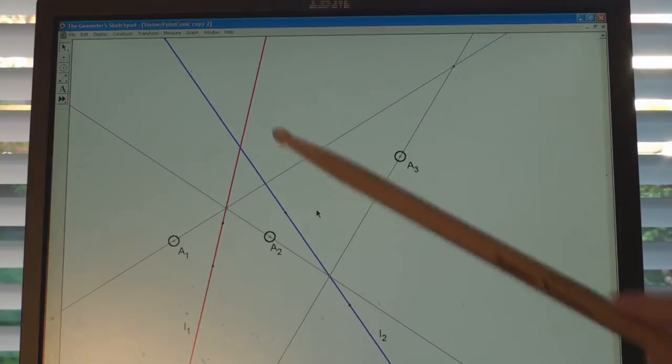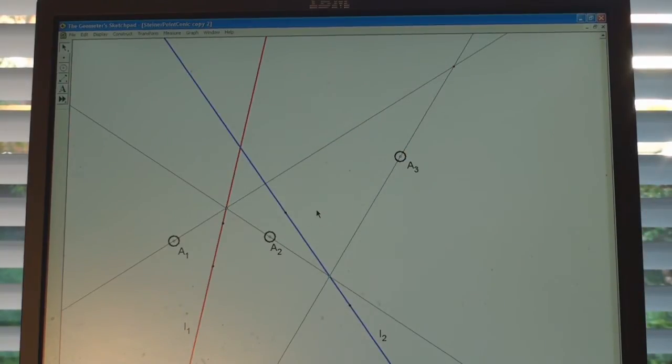So that's accomplished by, first of all, using L1 as a line of perspectivity between the pencil at A1 and the pencil at A2.